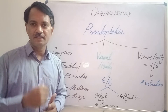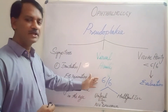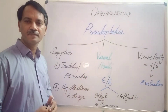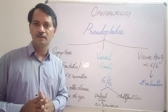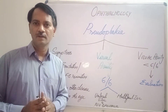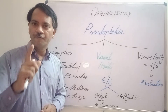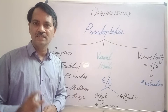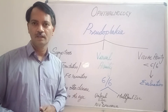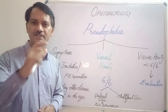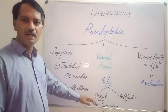A pseudophakic patient may have a normal visual acuity of 6/6. You may think the patient is absolutely normal, but it is not so. You have to find out whether the patient's near vision is normal or not. You have to check the patient's near vision. If the patient's near vision is normal, then the patient might be having a multifocal IOL implanted in his eyes.